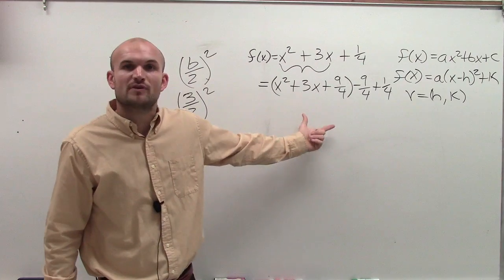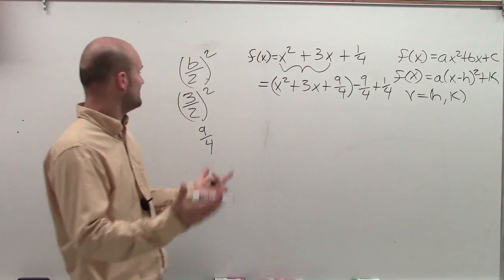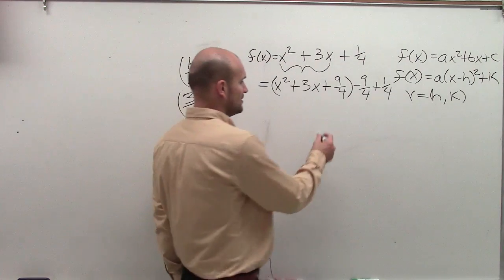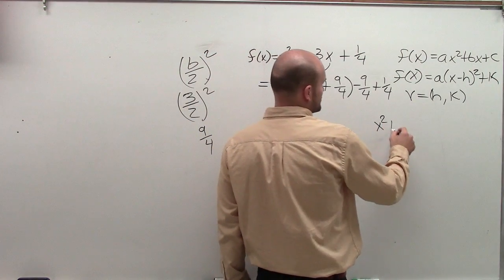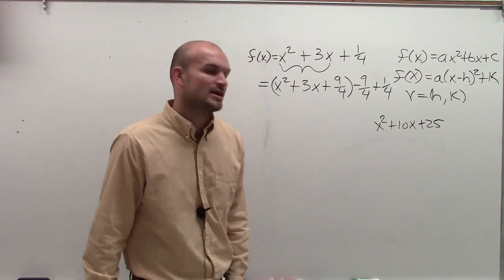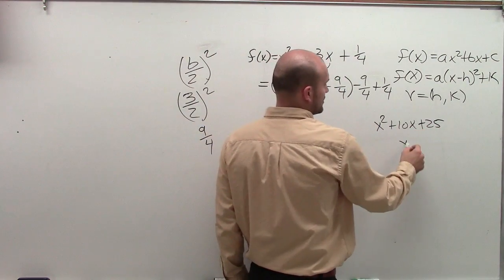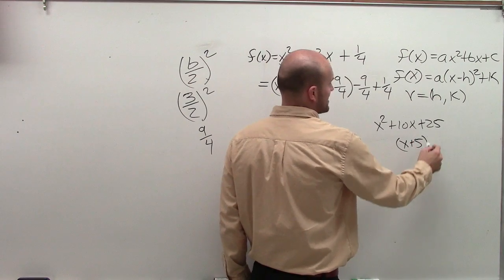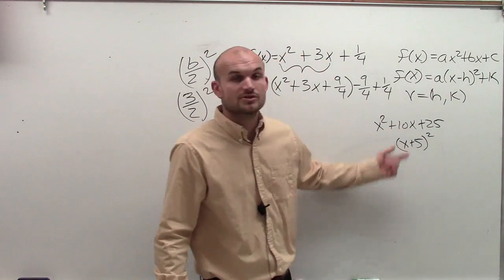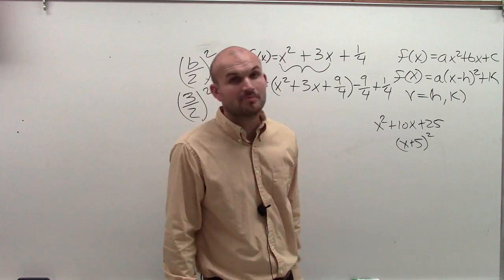So now I know this is a perfect square trinomial. It might not be as obvious to some of you that are looking at it. Remember, if we look at this, x squared plus 10x plus 25. That's a perfect square trinomial because x plus 5 times x plus 5 is x plus 5 squared. So you can see that that's going to be your binomial squared.